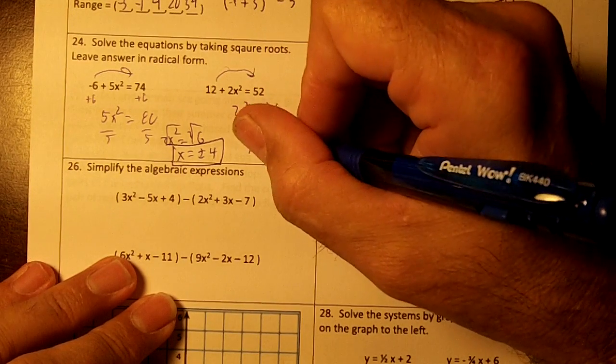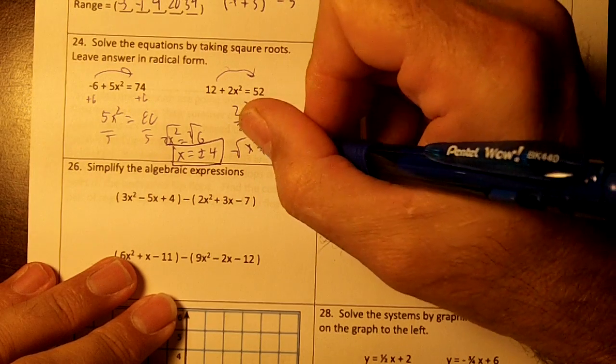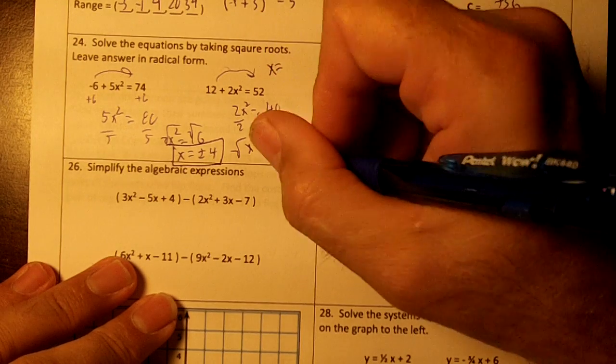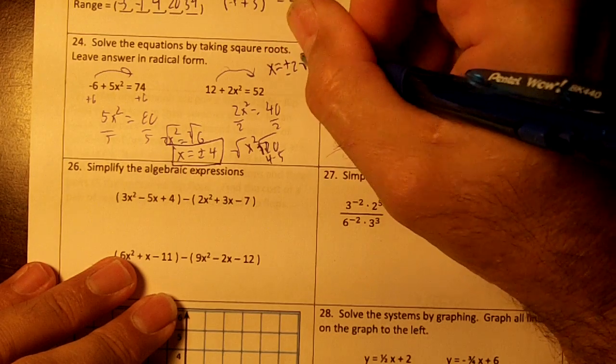And on this one, x² equals 20. Take the square root. You can't simplify the square root of 20 directly, but 20 is 4 times 5, so x equals plus or minus 2√5.